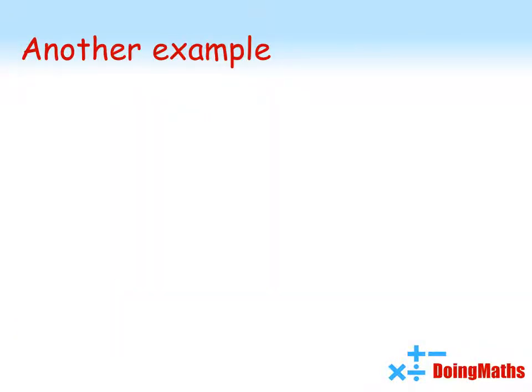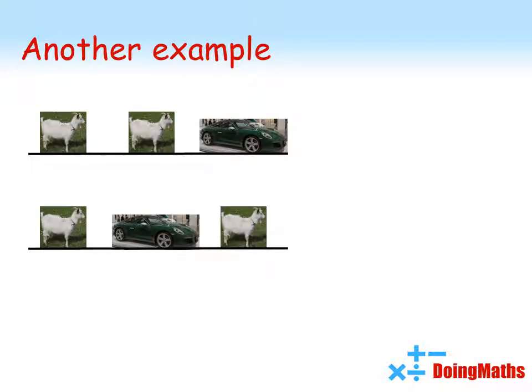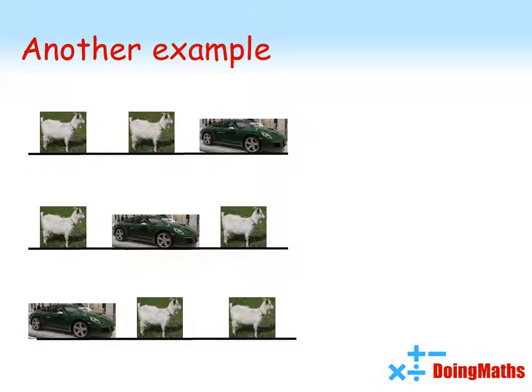Still not convinced? Well, let's look at it in a different way. There are three possible combinations behind the doors. Either the car is behind door three, door two, or door one. For this example, suppose you picked door one to start with.